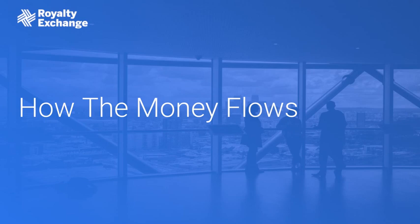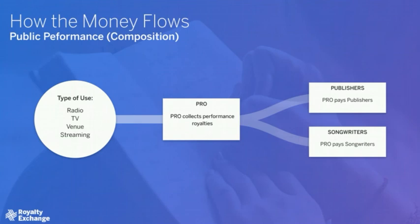So those are the main types of royalties. Now we're going to look at how the money actually flows in each case. For public performance royalties due on the composition copyright — paid to the publisher and songwriter — the entity performing the music publicly, like the radio station, TV venue, or service, pays a public performance royalty to the PRO, which we discussed earlier. These companies do all the work of monitoring and collecting public performance royalties, and then pay their members — both publishers and songwriters — directly.